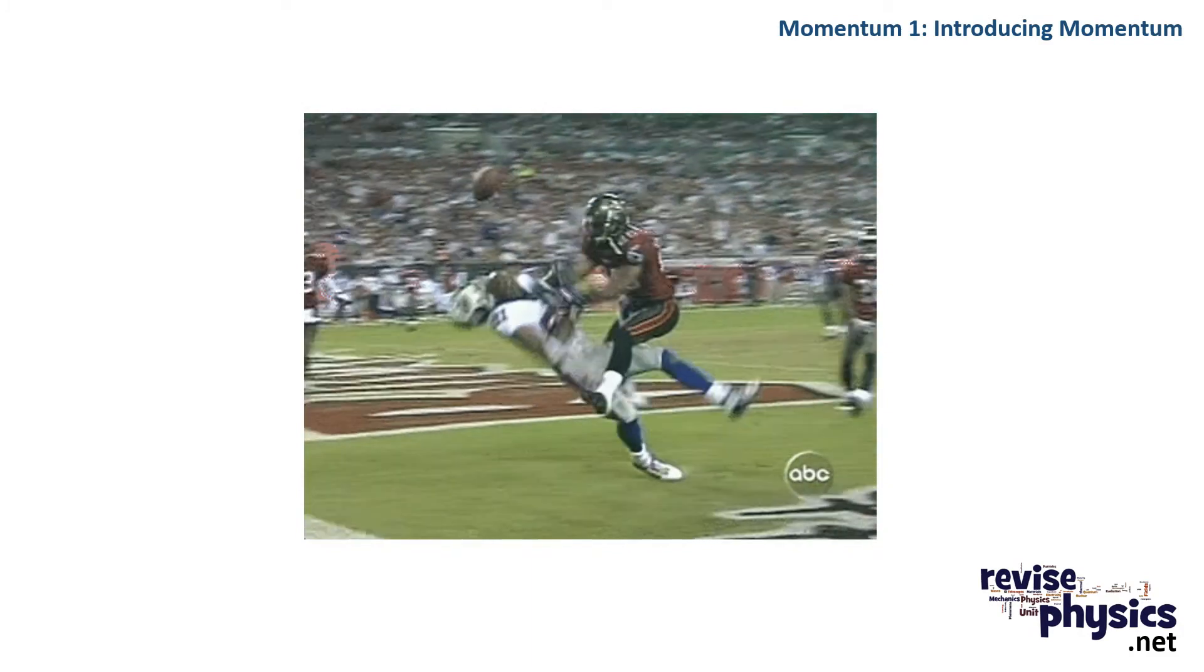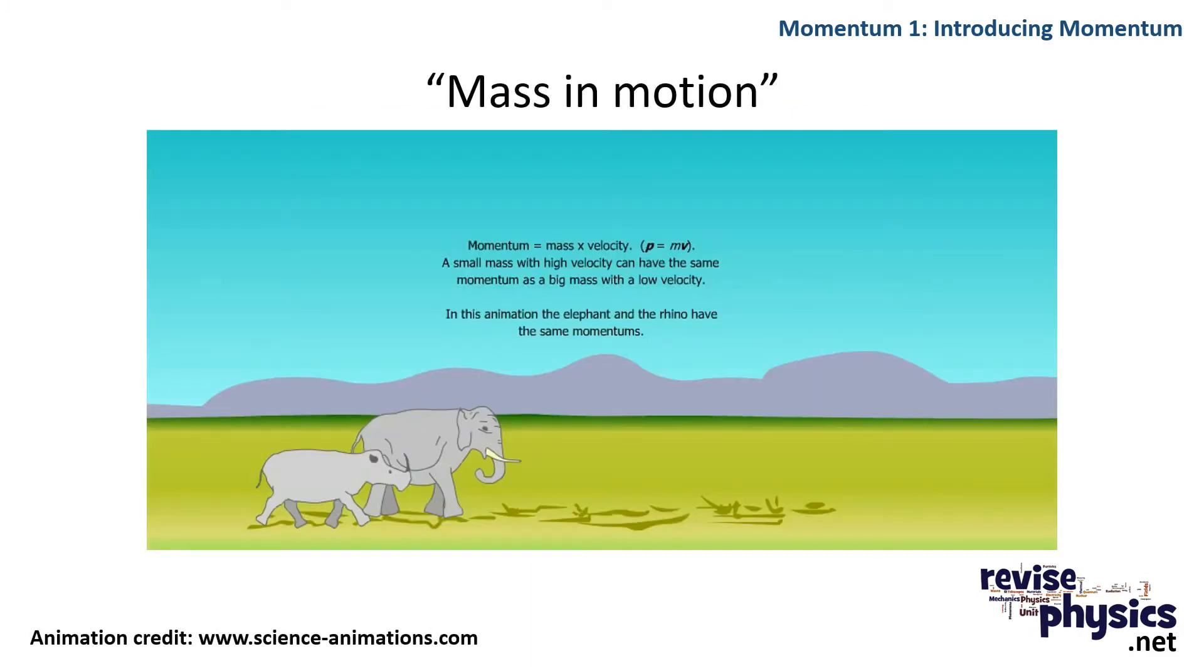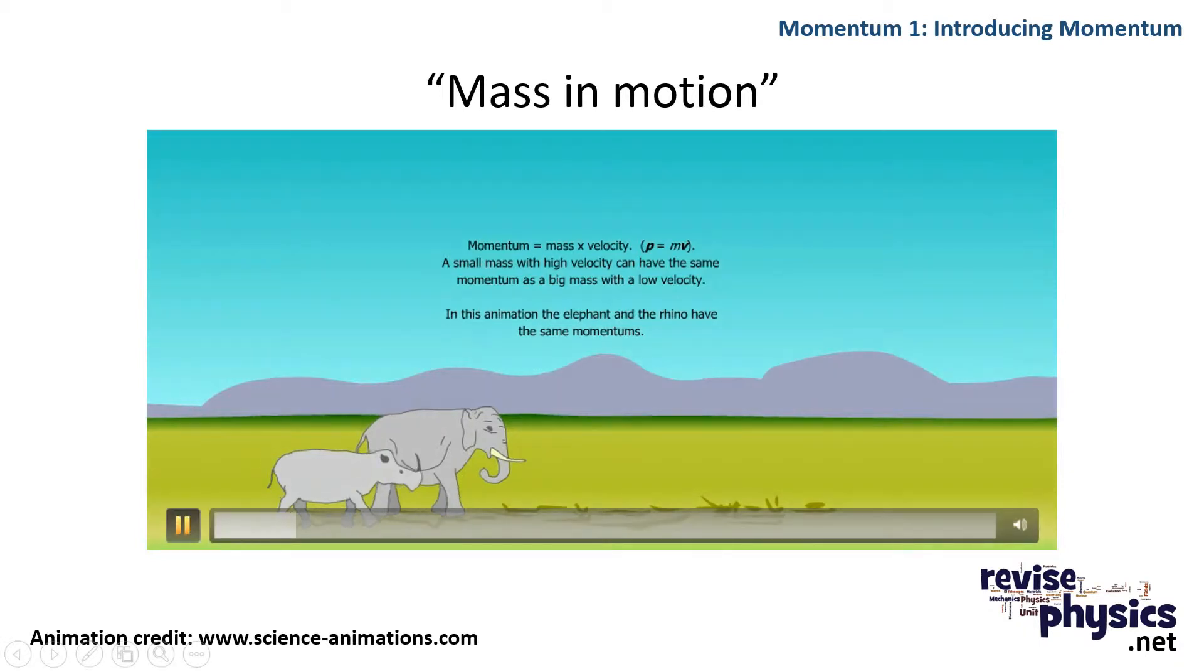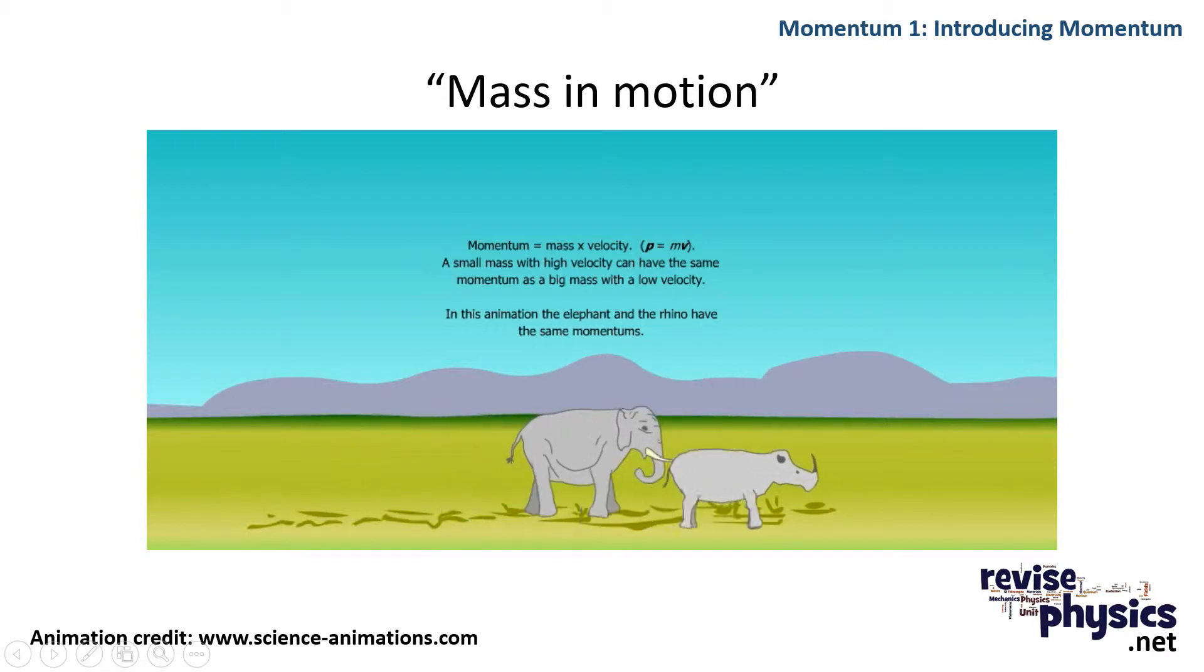That's all momentum is - it's basically mass in motion. You can have two creatures with different masses, for example the elephant and the rhino that we've got here. But if the rhino with less mass can run faster than the elephant, then its momentum can be the same.